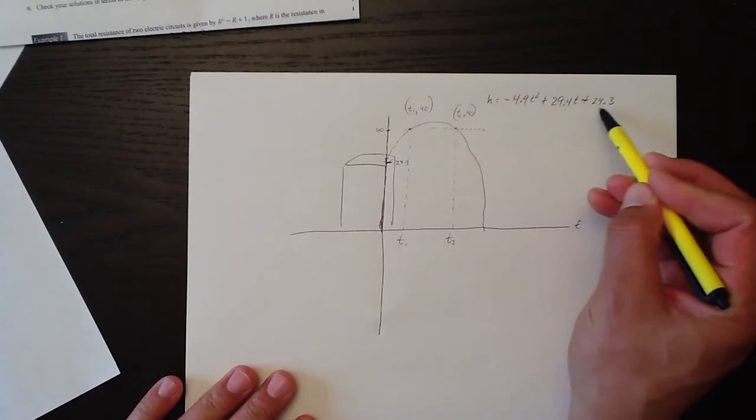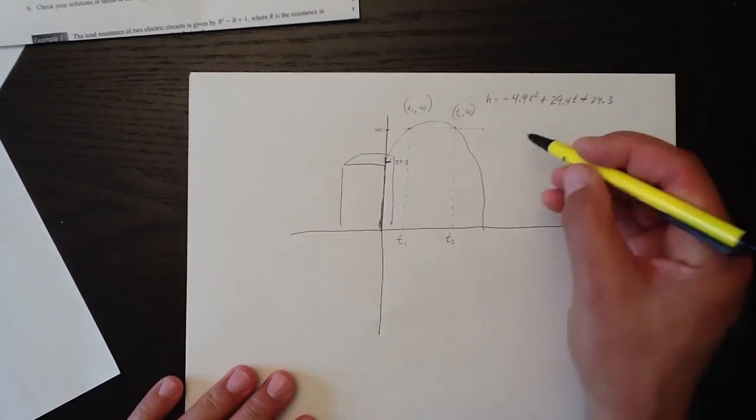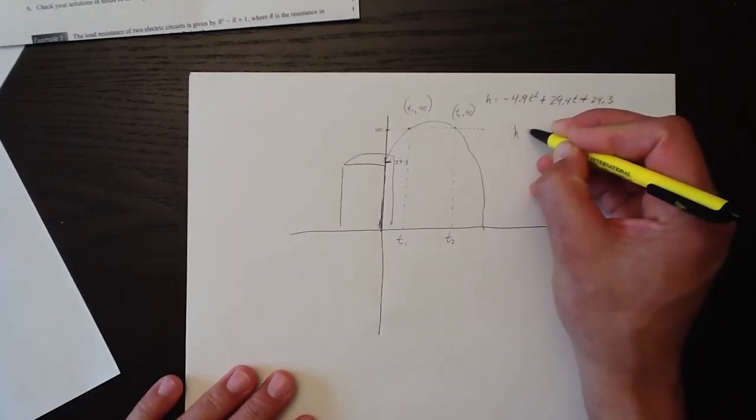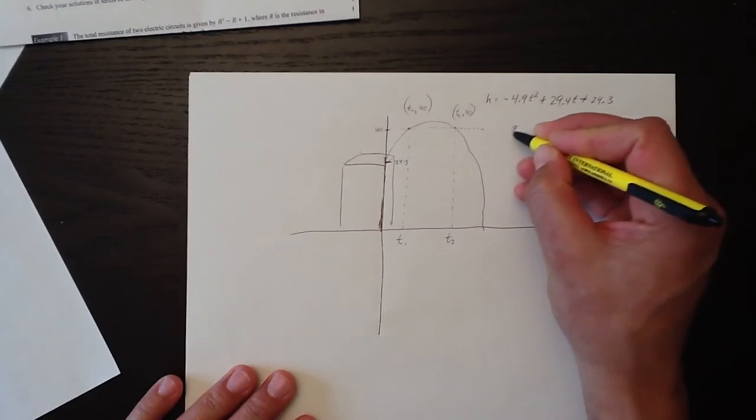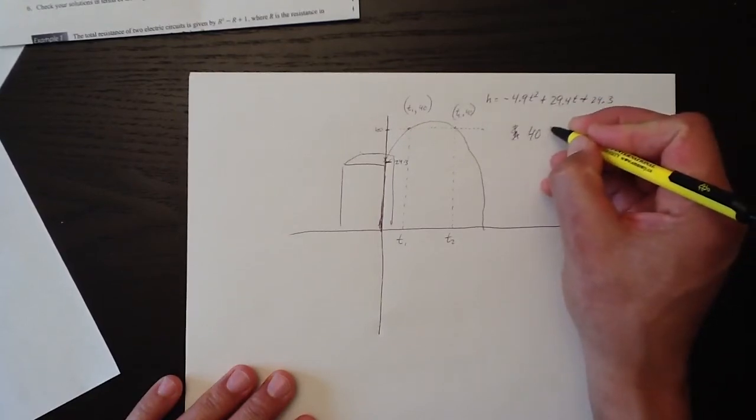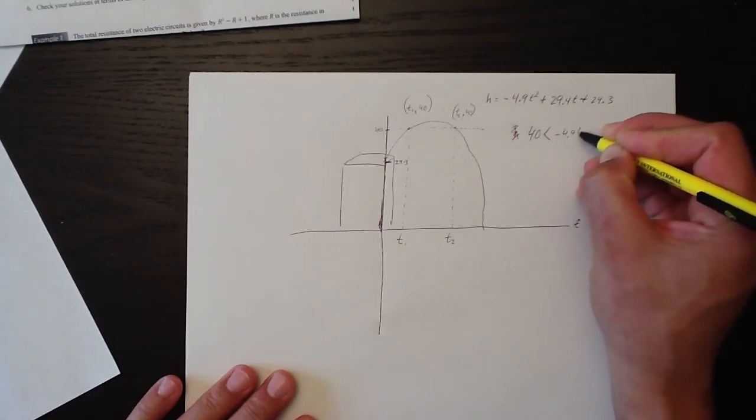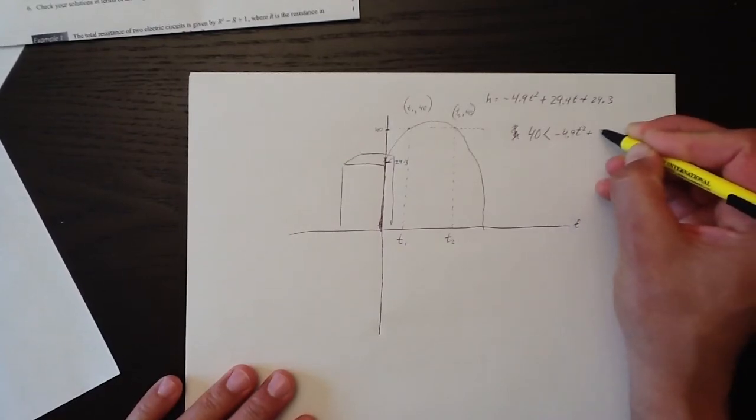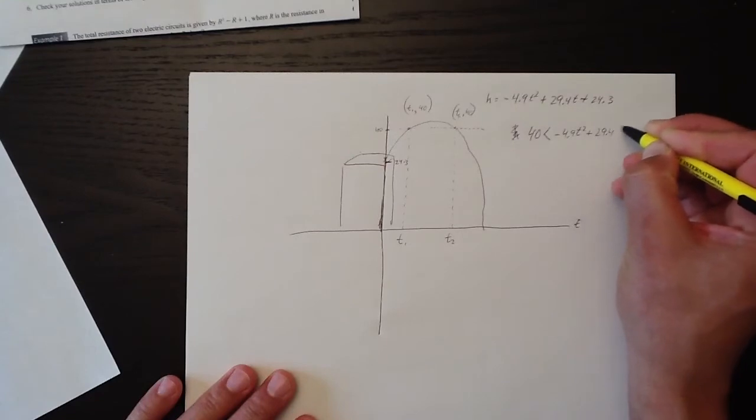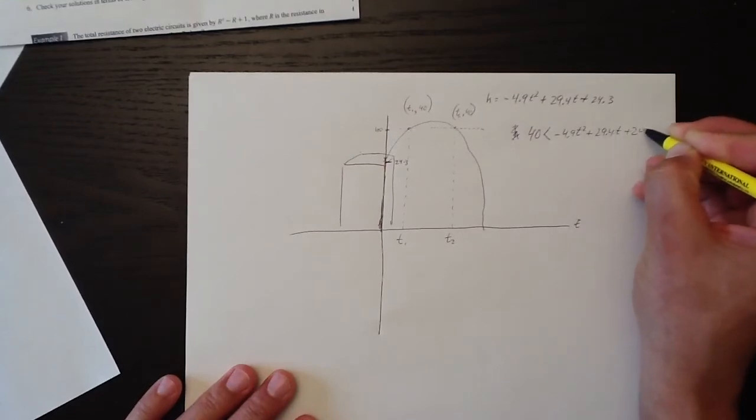So this stuff has to be greater than 40. So if we write the equation out, 40 is going to have to be less than the stuff, which is negative 4.9 t squared plus 29.4 t plus 24.3.